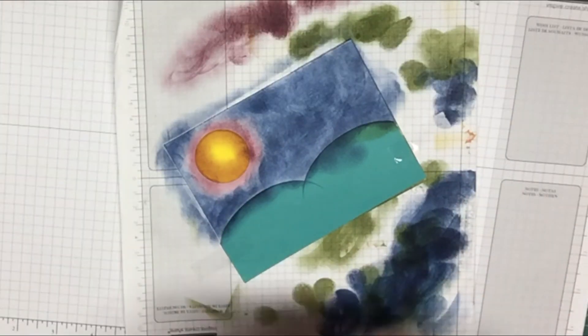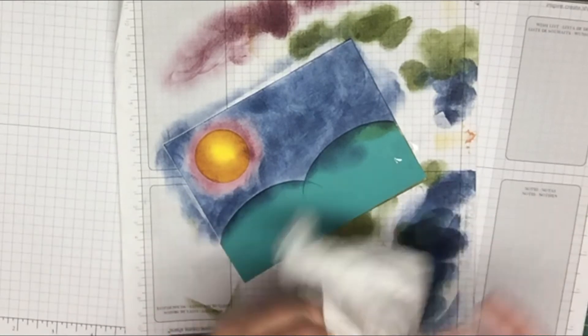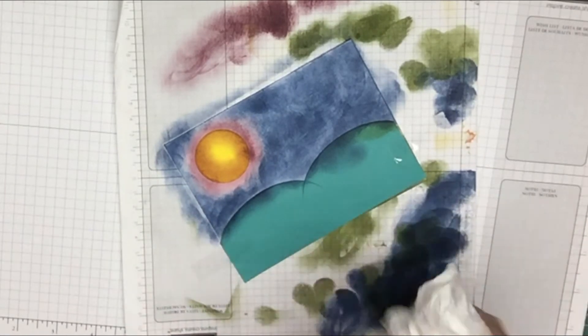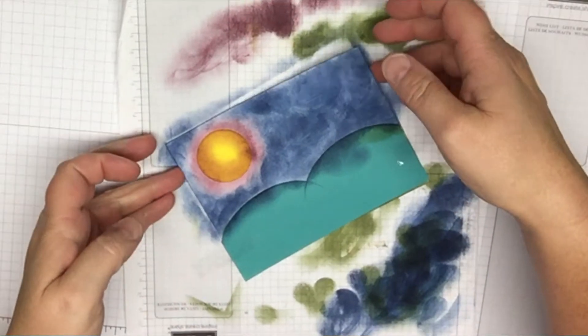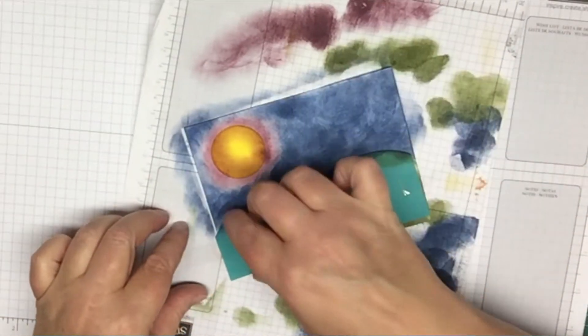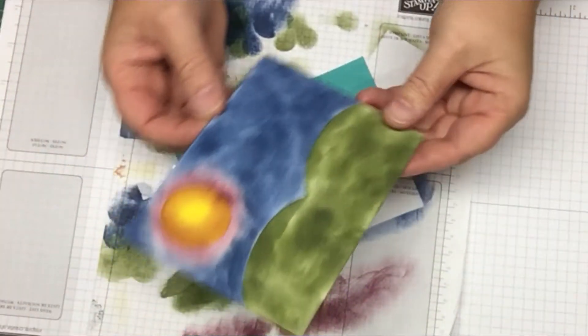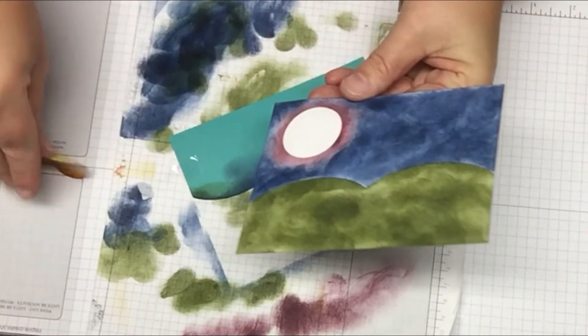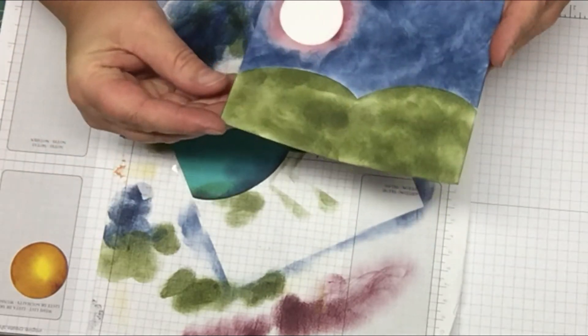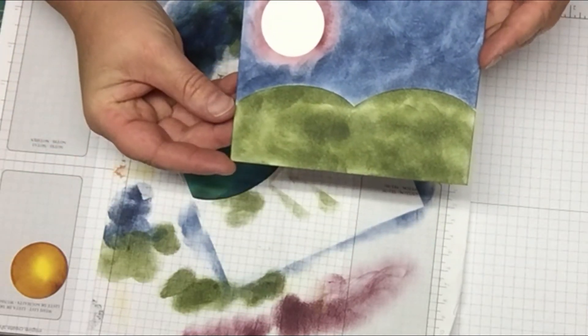And then the next color will be Night of Navy and that will finish off your card. And again you're going to use a sponge dauber, and then just go off the paper. So before I remove anything, I'm just going to take a wipe and just wipe off my hands, just to remove any ink that I might have on them. And then I'm just going to take the card base out and you'll see it'll look like this. And then you just want to peel your moon off of there. And there you have it.